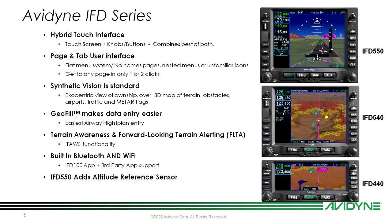We have built-in Bluetooth and Wi-Fi that is integral to the unit — no external dongles, no data cards. It comes standard with each and every IFD; it's not an optional upgrade. This allows you to interface with your Mark 10 keyboard that comes free with the IFD, gives you third-party app support with your favorite EFBs, and with the IFD 550 it adds an attitude reference sensor providing the egocentric view with pitch ladder and roll pointers.